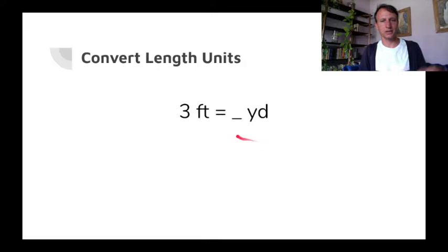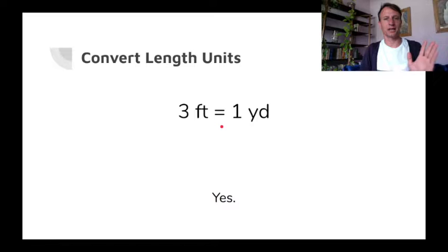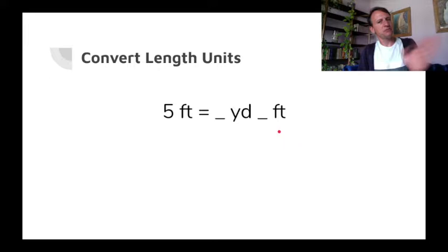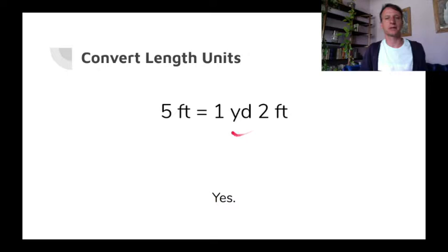Now we're going to go the other way. Three feet — that's one yard. So just go in the other direction. Six feet: we're going to divide by three. Six divided by three is two — two yards. Five feet: we're going to put that into mixed units, yards and feet. Pull out the three feet; we're decomposing here. Three feet makes one yard, and that leaves two feet — one yard, two feet.